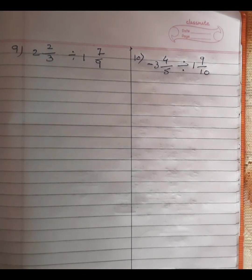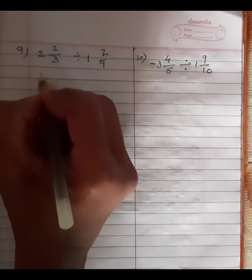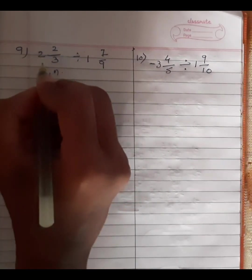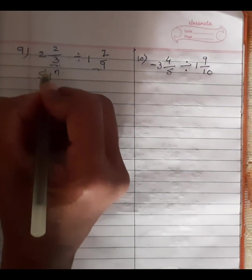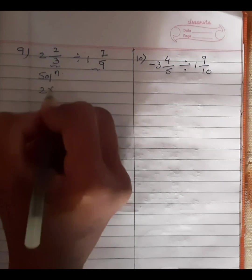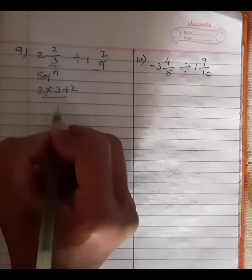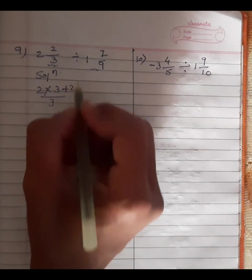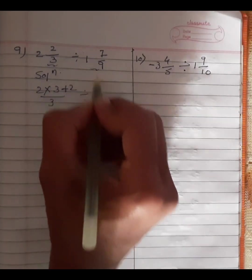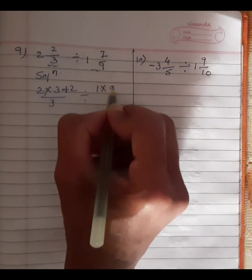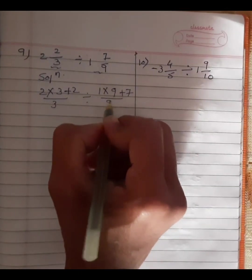Next, third question: 2 and 2 by 3 divided by 1 and 7 by 9. Solution we will write in the next step. This is in the form of a mixed fraction — this we have to simplify now. 2 is the whole number; we will multiply with denominator 3 and add with numerator 2, divided by denominator 3. And for the division part, 1 is the whole number; we multiply with denominator 9 and add with numerator 7, divided by 9.